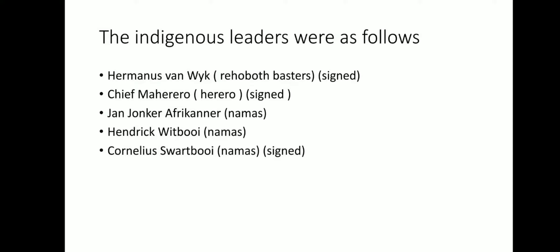Our Indigenous leaders that we are going to focus on for today were as follows. Hermanus van Wyk was the leader at that time of the Rehoboth Basters — he signed the treaty. Chief Maharero was the leader of the Herero clan at that time and also signed the treaty. Jan Jonker Afrikaner was the leader for the Namas — he didn't sign the treaty. Along with him was Hendrik Witbooi, who also didn't sign the treaty. Cornelius Swartbooi was also a leader of the Namas and he signed the treaty.